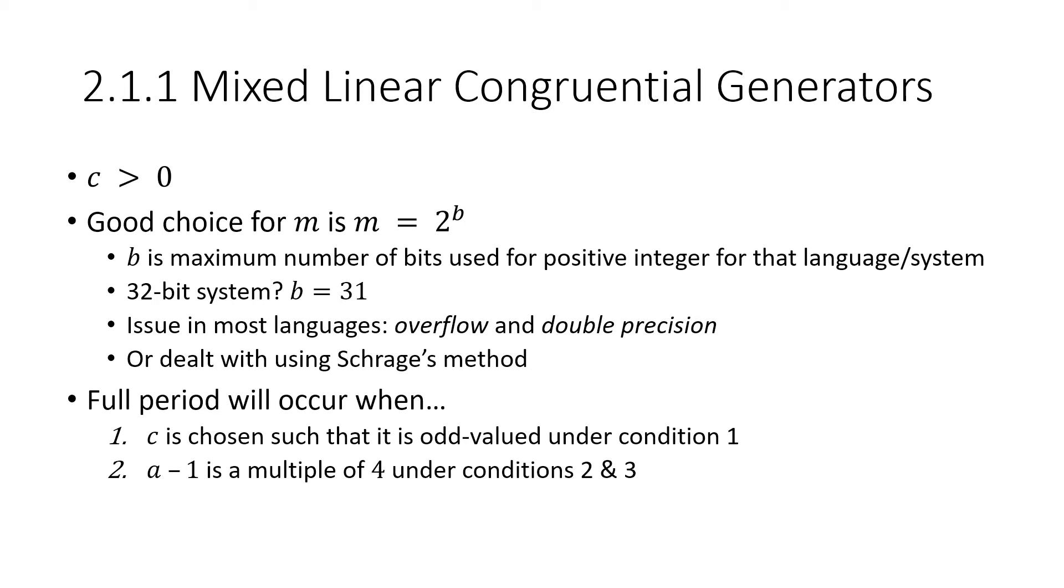However, in most languages, you can't go to the max because it results in what we call overflow, or basically your computer can't store all of that. So one of the ways to avoid this is using a double precision variable. Or it can be dealt with using Schrage's method, which goes through some transformation mathematics in order to obtain the best B value and the best period for your linear congruential generator.